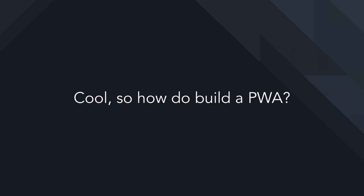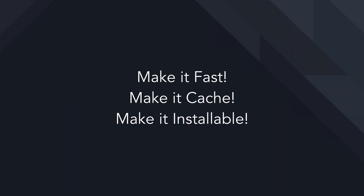These are the key features of a progressive web app. I've broken down how to build one into what I'm calling Mike's three progressive web app tenants: make it fast, make it cache, make it installable. I tried really hard to find a third word that rhymed with fast and cache, but I wasn't able to. So let's tackle the first part — making our web app fast.